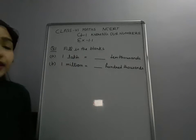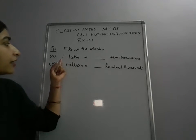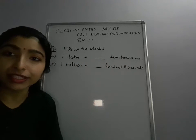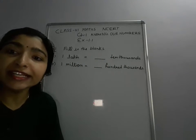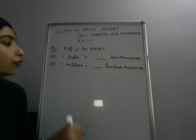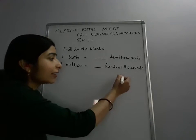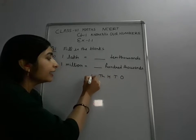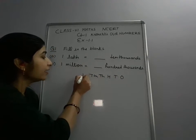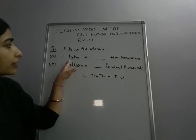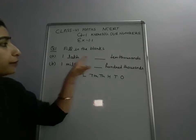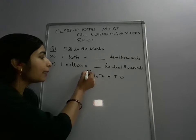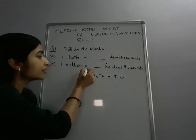Here it is asking: 1 lakh is equal to dash 10,000. So you know this is the Indian place value chart. When you do rough work like 1, 10, 100, 1000, 10,000 and then lakh. So in this question, yeh puchha gaya ki 1 lakh mein kitne 10,000 hote hai. So aapko pata hai, jab aap 10,000 se lakh pe jate hai, to there is a...